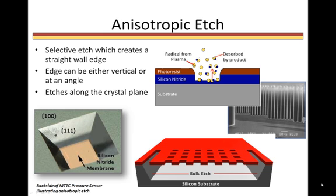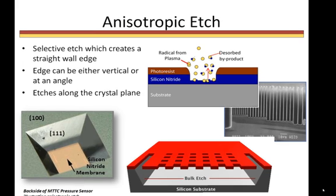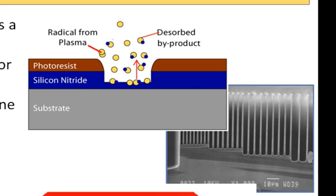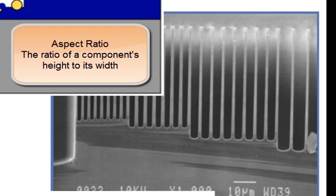Another type of anisotropic etch is a vertical wall profile like the ones you see in these two graphics. To achieve such profiles, a dry etch process is required. Be sure to view Etch Processes Part 2 to learn how these straight wall profiles are made, as well as how we can achieve the high aspect ratio seen here on this graphic, where we have an etch that is many times taller than it is wide.